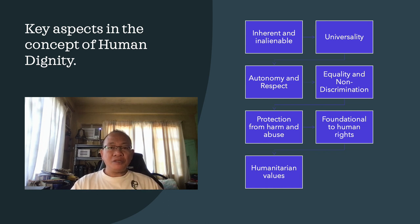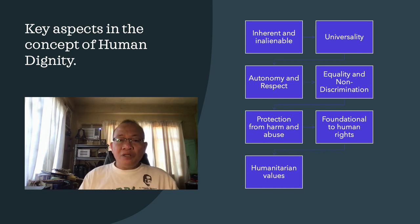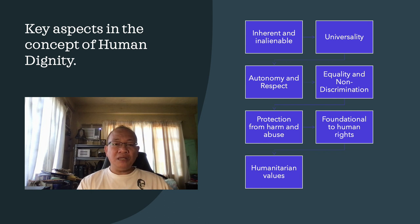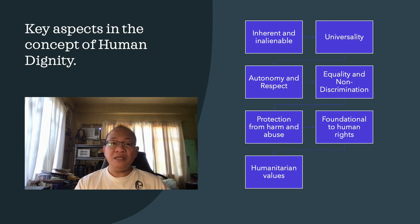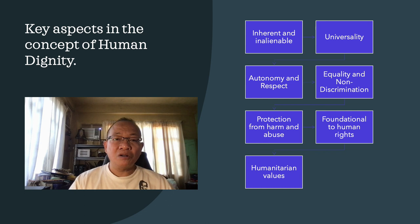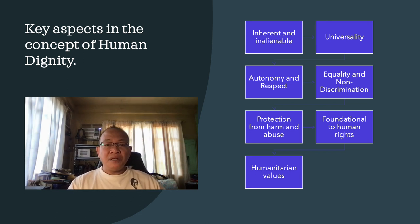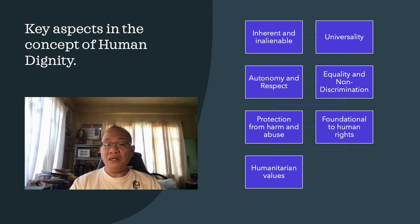Here are some key concepts of human dignity from a human rights perspective. Number one is inherent and inalienable. Human dignity is considered inherent to every human being, meaning it is an essential quality that cannot be granted or taken away by any external authority. It is not contingent upon factors such as nationality, race, gender, religion, or social status. Second is universality. Human dignity is universally applicable to all individuals, irrespective of cultural, religious, or ideological differences. It forms the basis for the recognition and protection of human rights across diverse societies and contexts.